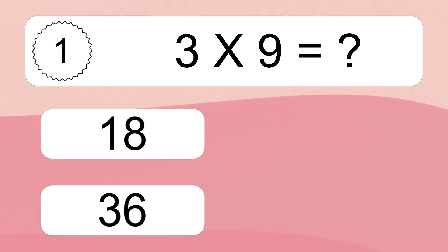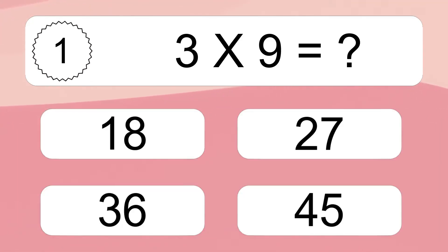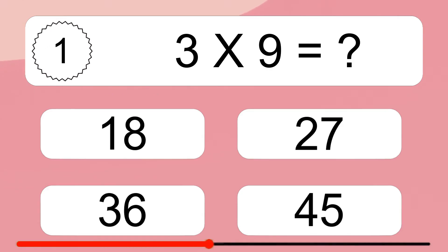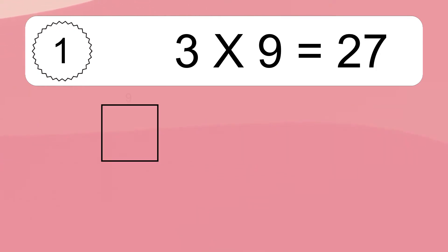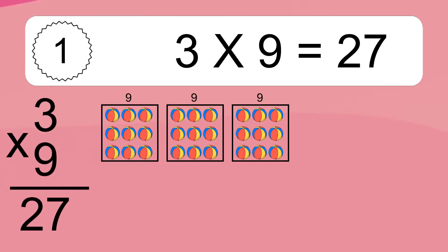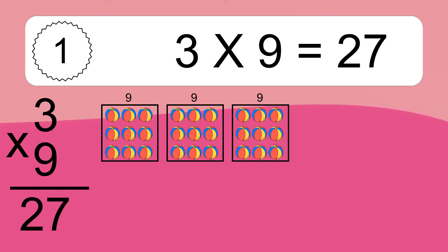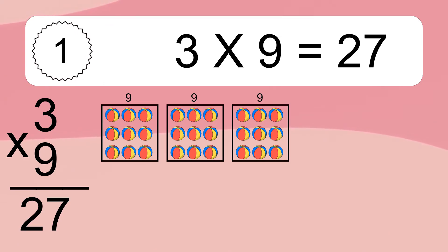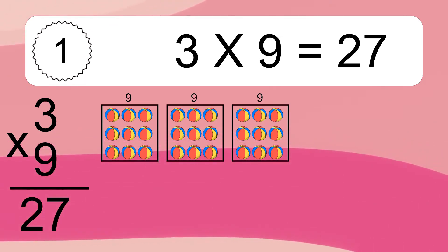Three times nine equals what? Three times nine equals 27. We have three boxes, and each box has nine colorful balls inside. If you count all the balls in all the boxes together, you will have three times nine balls. This equals 27 balls.